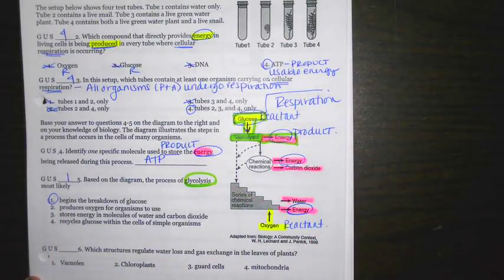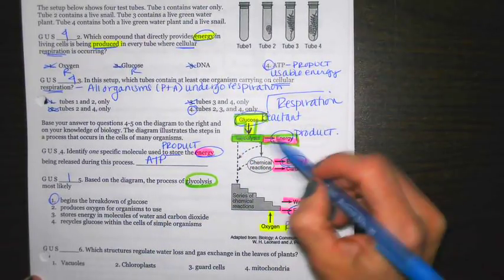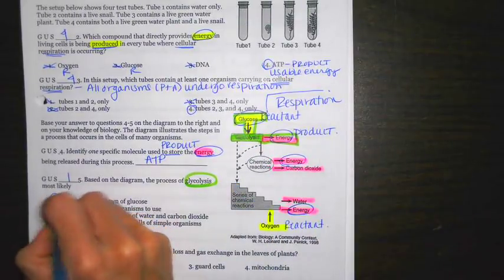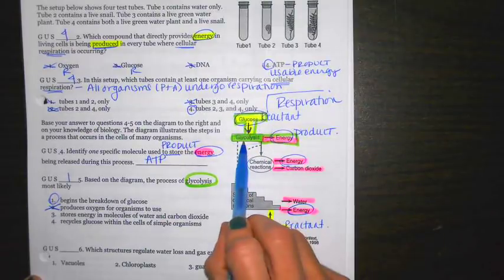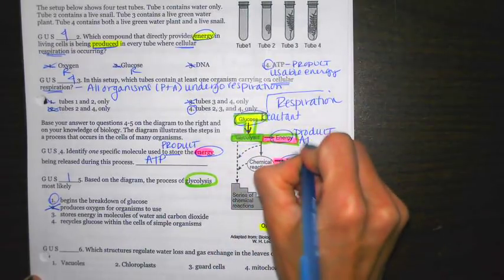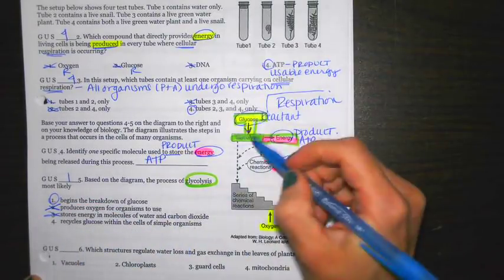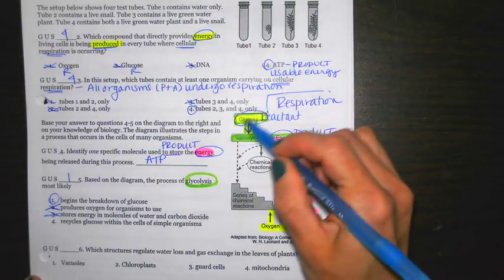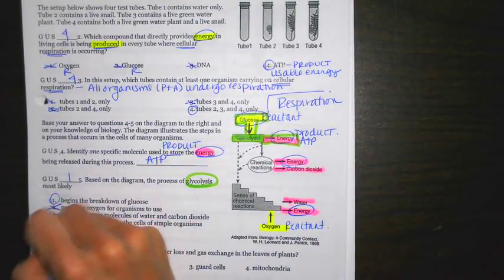If I go down the choices, and sometimes that's what you have to do for these questions. It says produces oxygen for organisms to use. Oxygen is not being produced from this. Energy is being produced. And then it's going into other chemical reactions. So you can cross that one off. Stores energy in molecules of water and carbon dioxide. Again, if I look at glycolysis, what's coming out? Energy. That's not it. Recycles glucose within the cells of simple organisms. I don't really see any recycling going on. Recycling would indicate that there's actually a cycle occurring here. So that's not it.